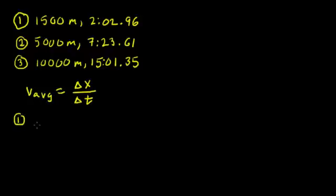So for race number one, we're going to compute average speed by dividing 1,500 meters by the time. Now the time is given in minutes and seconds and fractions of a second, and we need to convert that into seconds if we're going to wind up with an answer in meters per second. So 2 minutes 2.96 seconds is going to convert into 122.96 seconds.